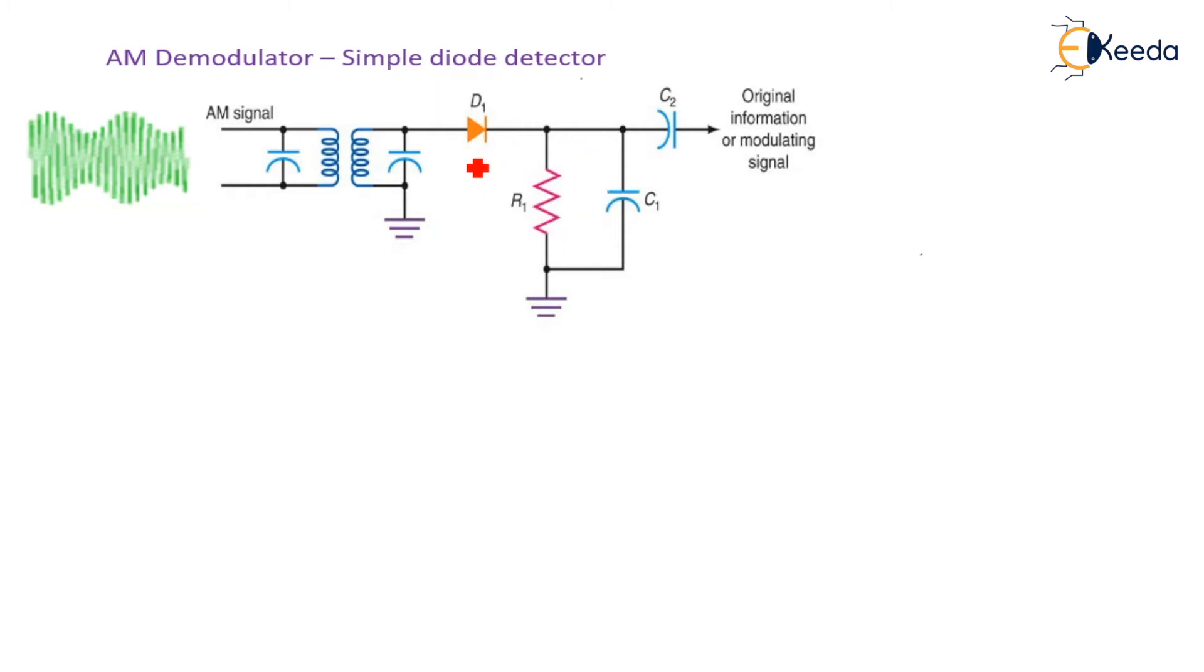During the positive half of the AM envelope, diode D1 conducts and current flows to R1. During the negative half cycle, diode D1 is reverse biased and no current flows. As a result, only the positive half of the AM wave appears across the arc.